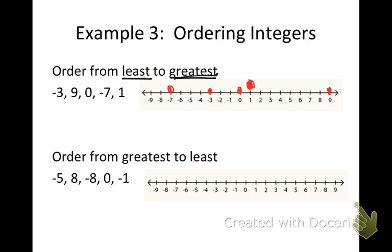Now I can visually see where the numbers are. The smallest number, which is way to the left, is negative seven. My next number is negative three. Then I have zero. Then I have one. And then I have nine. So I can easily see my answers when I use my horizontal number line.